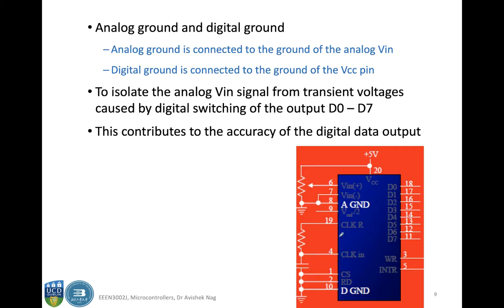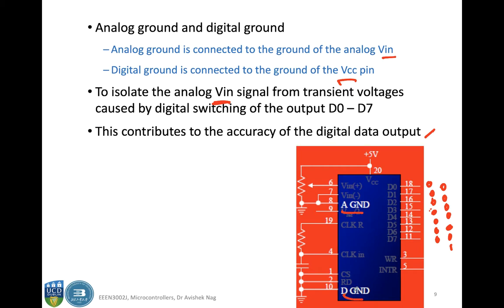There is an analog ground and a digital ground in the ADC 804 IC. The analog ground is connected to the ground of the analog Vin and the digital ground is connected to the ground of the VCC pin. This is done to isolate the analog signal from transient voltages caused by digital switching of the output, because changes in the output bits will cause transient voltages that affect the analog Vin and the accuracy of the digital data output.